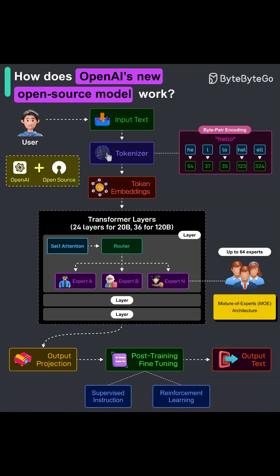Instead of using one giant feed-forward block for every token, the model uses a mixture of experts — up to 64 specialized mini-networks, each trained to be great at certain patterns: math, code, long-context reasoning, or nuanced language. A lightweight router scores the experts for each token and activates only the top two, sparing compute while often boosting quality. It's like calling the right pair of specialists instead of assembling the entire hospital staff for a routine checkup. As tokens pass through layer after layer, attention refines the context and the experts transform representations in specialized ways, enabling lower latency and cost without sacrificing capability.